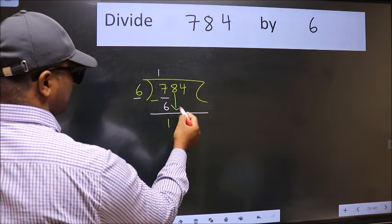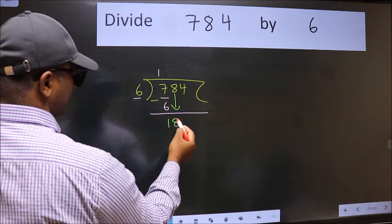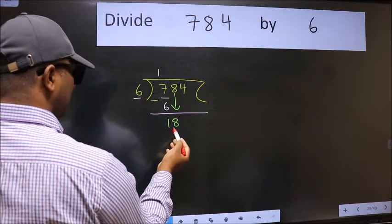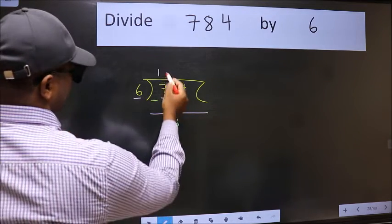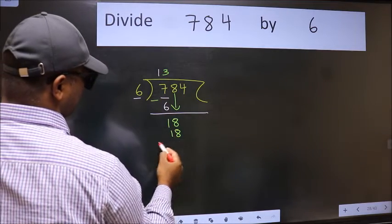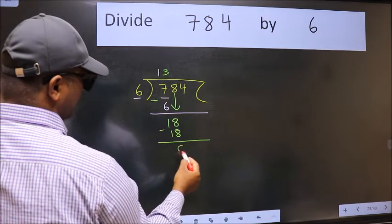After this, bring down the beside number. So 8 down. 18. When do we get 18 in 6 table? 6 times 3 is 18. Now we subtract. We get 0.